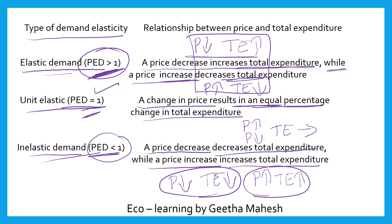When total expenditure increases as price increases, and decreases as price decreases, price and total expenditure are moving in the same direction. In that situation, the elasticity of demand is less than one — inelastic demand.